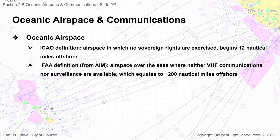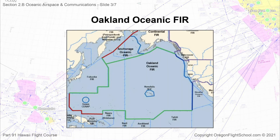When looking at an oceanic airspace map, you will notice that the Oakland Oceanic FIR begins anywhere from 100 to 200 nautical miles off the shoreline of the western United States. This is far beyond the 12 nautical miles that ICAO describes, and it fits in well with the FAA's definition of being beyond line of sight for VHF communications or ATC surveillance. The Oakland Oceanic FIR begins at the border of the Seattle, Oakland, and Los Angeles FIRs about 100 to 200 nautical miles off the west coast in most places.